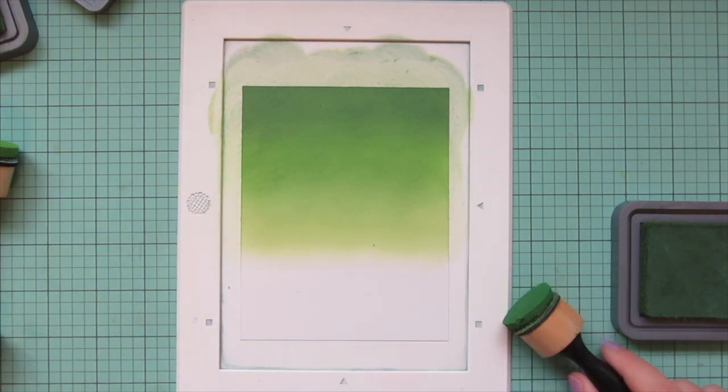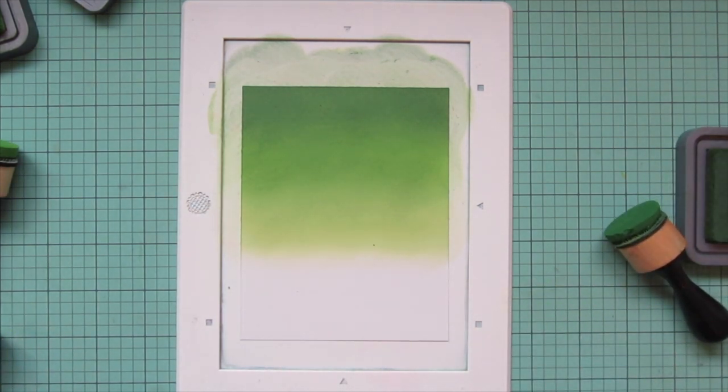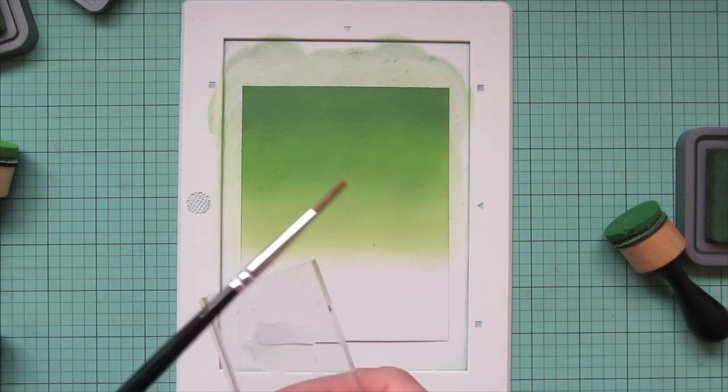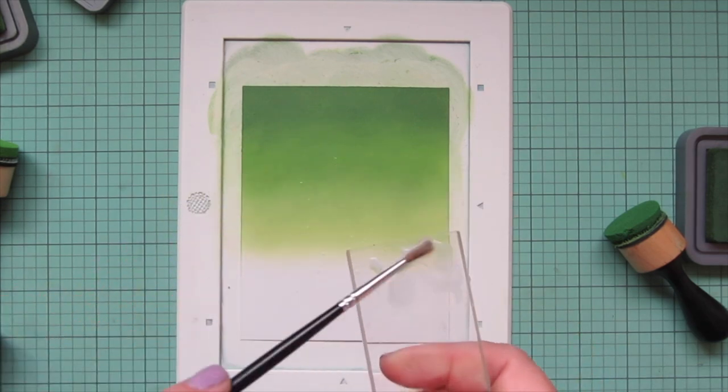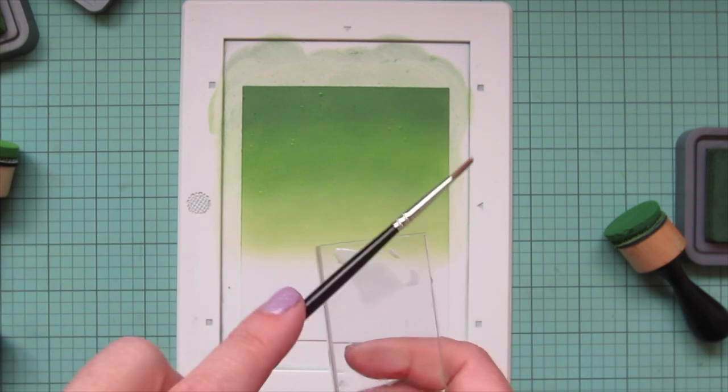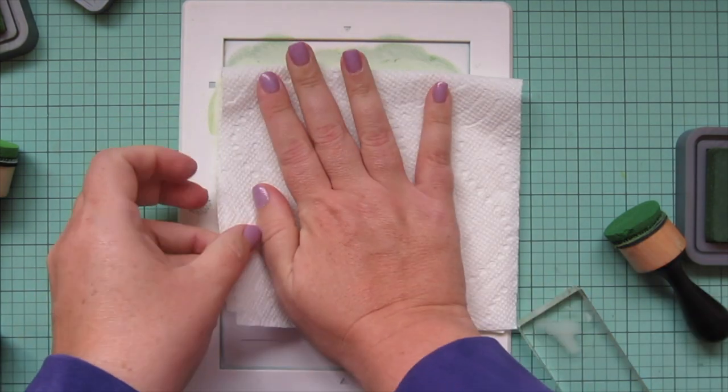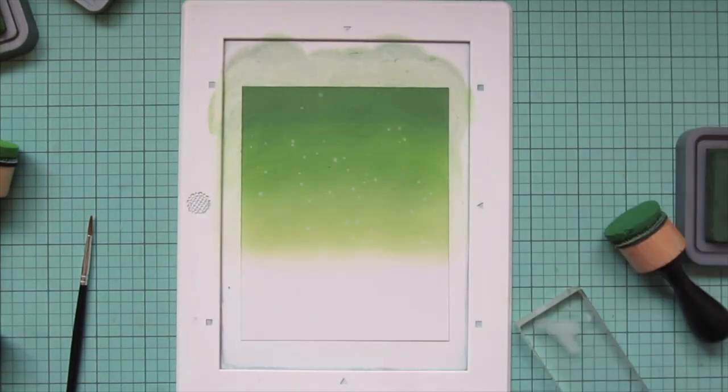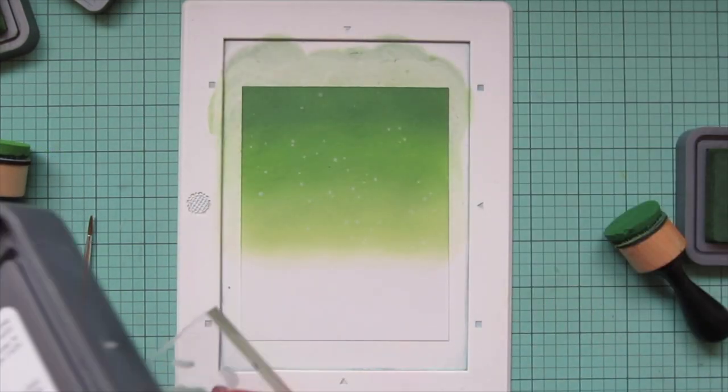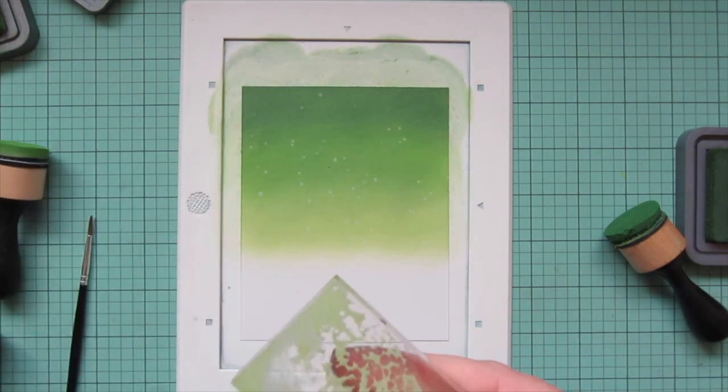Then I wanted to do some splatter detail in this background to give it a bit more interest since this background is going to be pretty simple I want to create some more movement and some interest like I mentioned so the first thing I'm going to do is just add some water to an acrylic block and do some splatters with that. I'm going to give that a few seconds to soak into the cardstock so it can start to react with those distress oxide inks and then I will blot that up with a paper towel to remove some of that ink.